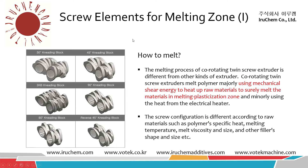Now I'd like to tell you about the melting zone screw element. In the melting zone, we use kneading blocks at 30 degree, 40 degree, 60 degree, and 90 degree angles. We sometimes use a 45 degree reverse backward kneading block. And there is one special kneading block, the 3KB kneading block, which is very useful for very precise kneading. The most important thing is that the melting process of a co-rotating twin screw extruder is different from other kinds — like a single screw extruder and the counter-rotating twin screw extruder.